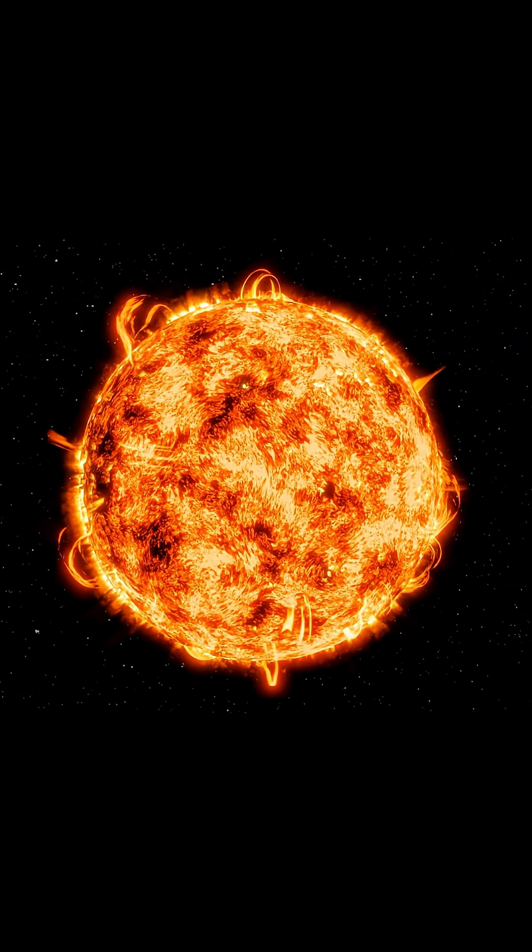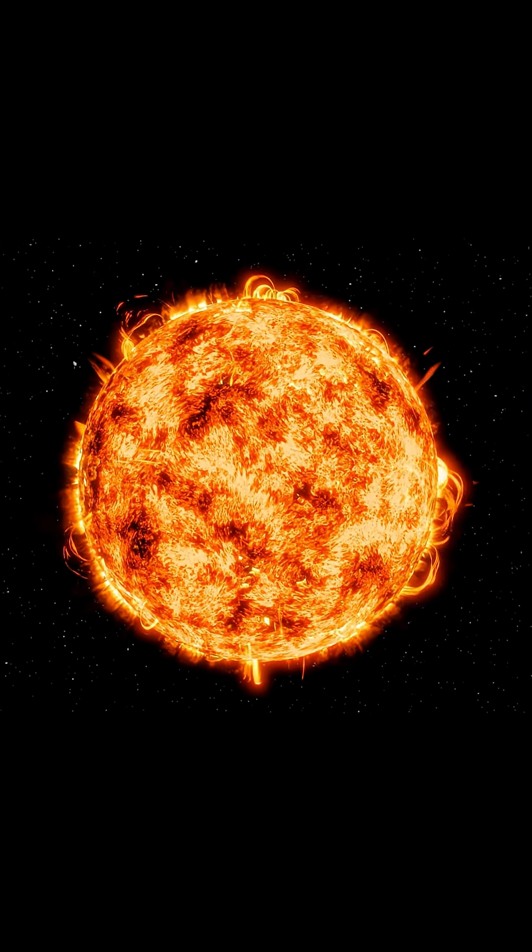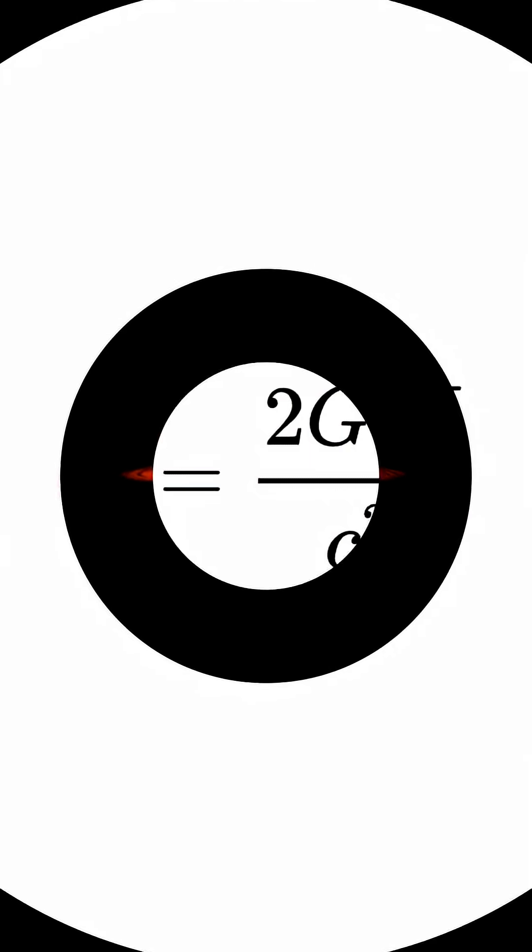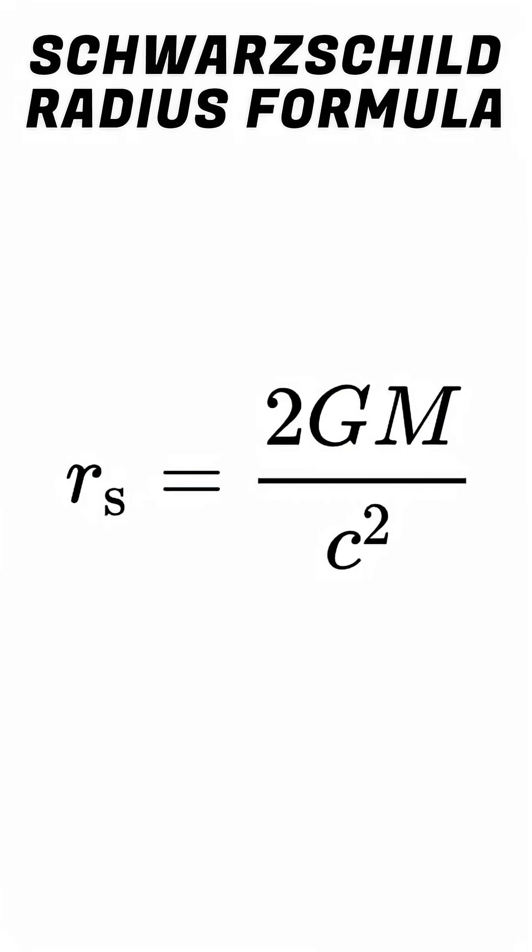As you might know, to make something into a black hole, we need to pack its mass into an object with radius smaller than the Schwarzschild radius for that mass. Past that point, it'll inevitably collapse into an infinitely dense singularity. And to know that radius, we have this equation.